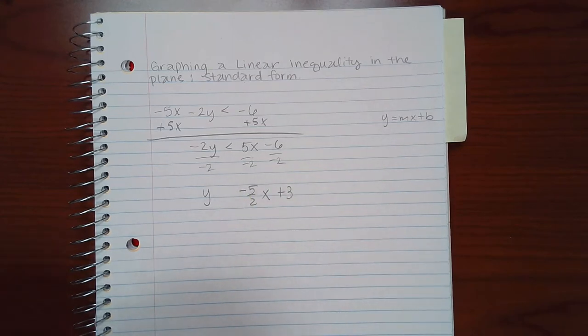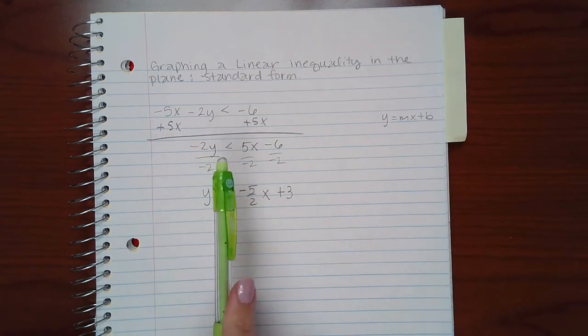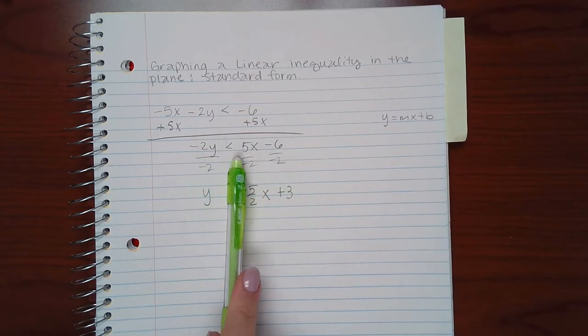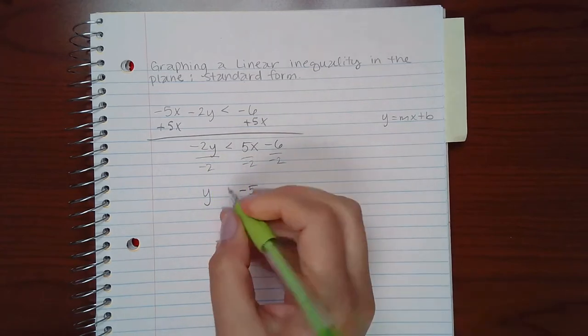However, we have to remember the one big rule with inequalities. It's the one rule that separates the process of inequalities from the process of equations. And that one rule is if I divide by a negative, I need to flip this symbol over, which means the symbol will now be open toward the y.